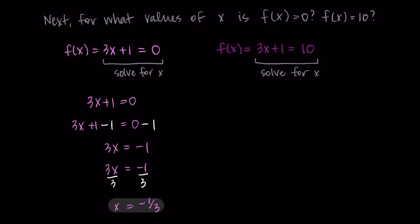This tells us that f(-1/3), meaning -1/3 is our input, produces the output 0. And you can always take your answer and plug it back into the very beginning. If you take x and replace it with -1/3, you should get out 0.